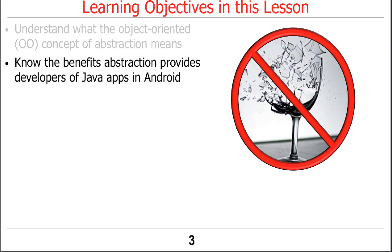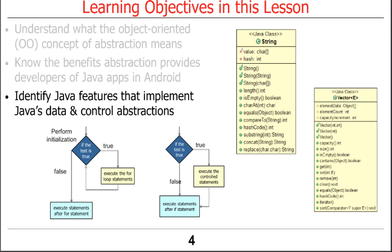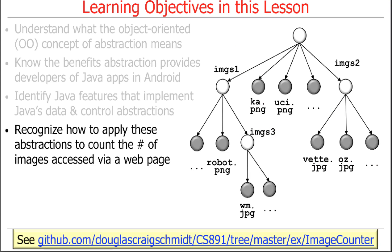The main reason for having abstraction is to avoid breaking things when stuff changes. That's the main thing. Why is abstraction useful? And I'll briefly talk about some features that implement control and data abstractions.